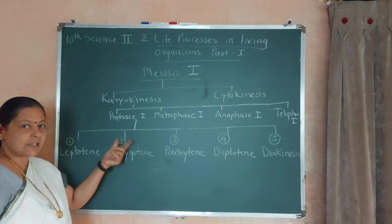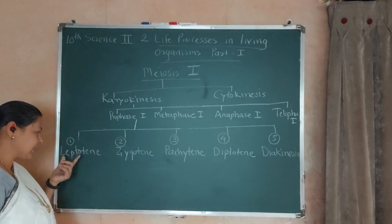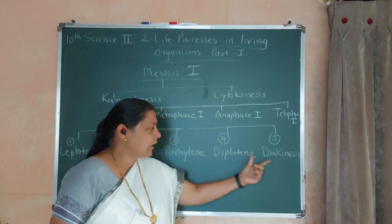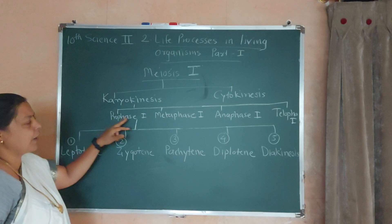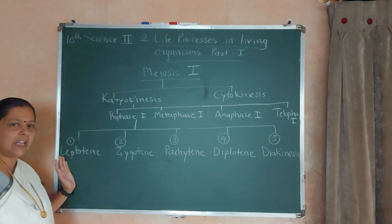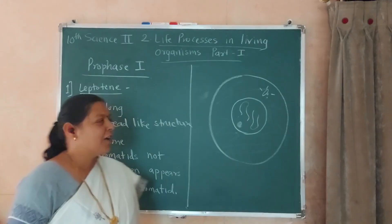Now in prophase 1st, again some steps are involved. The first is leptotene, then zygotene, then pachytene, then diplotene, and finally diakinesis. These are the steps involved in prophase 1st, and we will see them one by one.